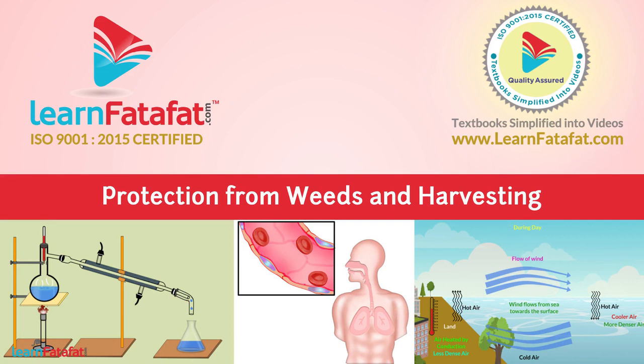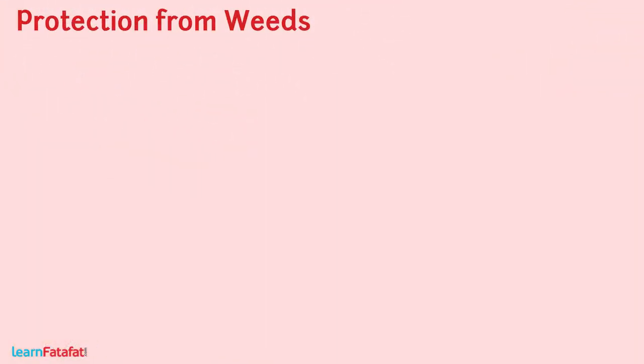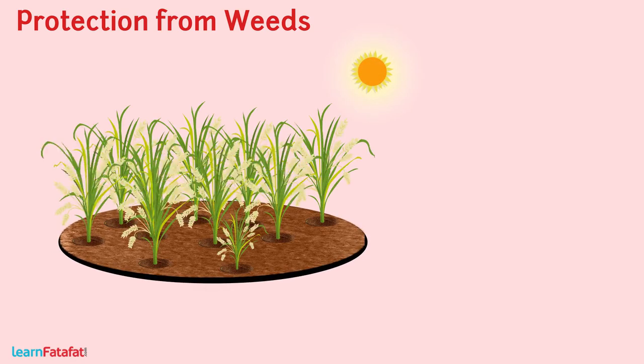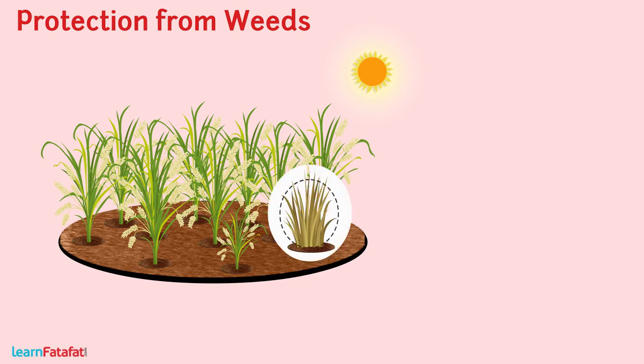Protection from Weeds and Harvesting. In the crop plant, along with desired crops, many other undesirable plants grow naturally. In the fields, all plants other than crop plants are called weeds.